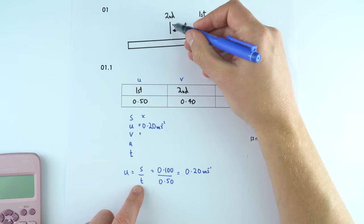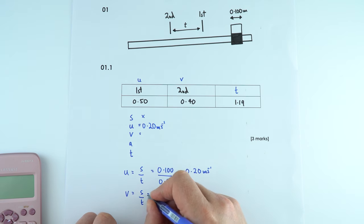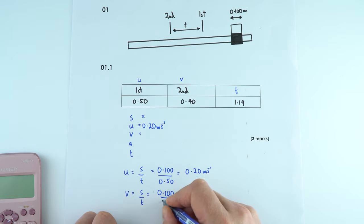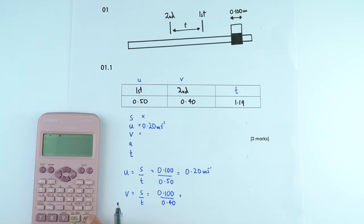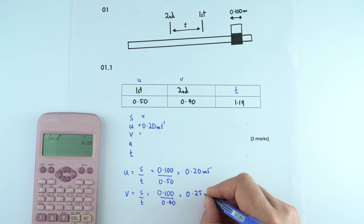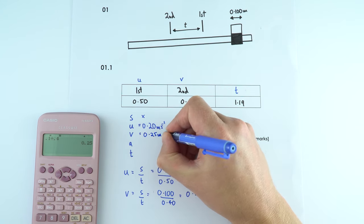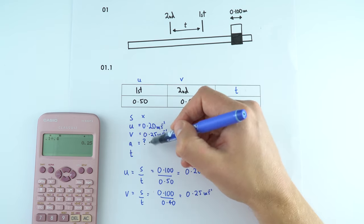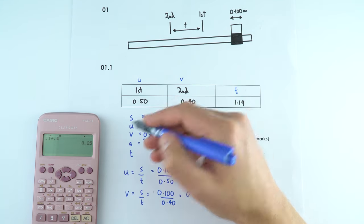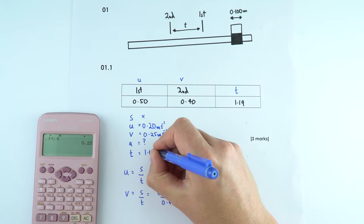We can do the same for the final velocity in the second light gate: V = displacement over time = 0.100 divided by 0.40 = 0.25 metres per second. We can see it has got faster so it's accelerating. We assume constant acceleration, and the time to get from the first to the second light gate was given as 1.19 seconds.